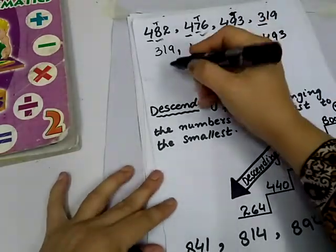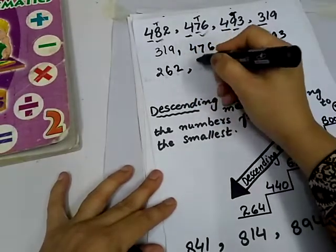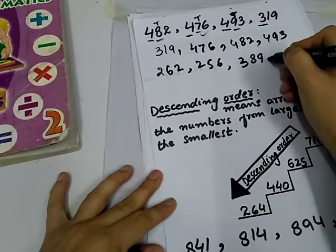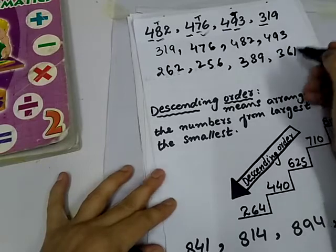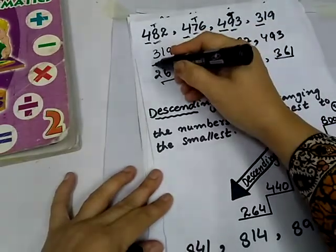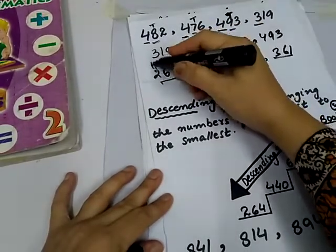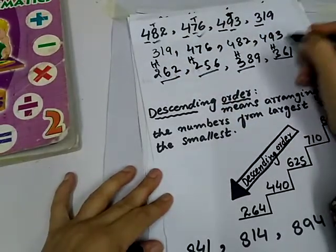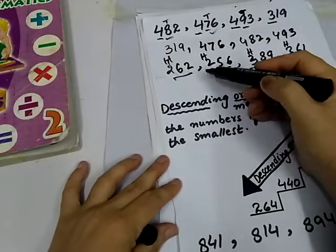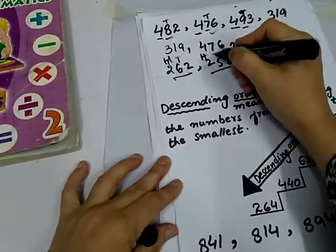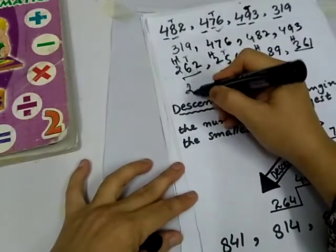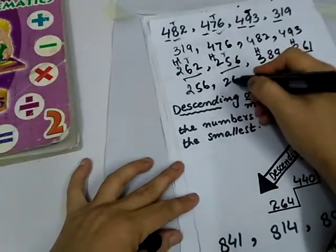Now, check example number 2. 262, 256, 389 and 361. They are all three digits numbers. Now, check the first place value. 200, 200, 300, 300. Now, 200 is less than 300. So, check the 200s. Now, 200 and 200 are equal. So, check the 10 value. 10 value is 6 and 5. So, 5 is smaller than 6. So, the first number ascending order 256 and then 262.